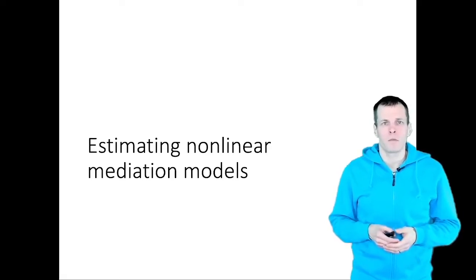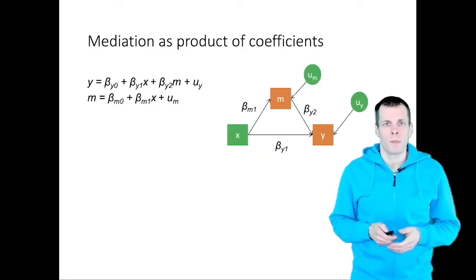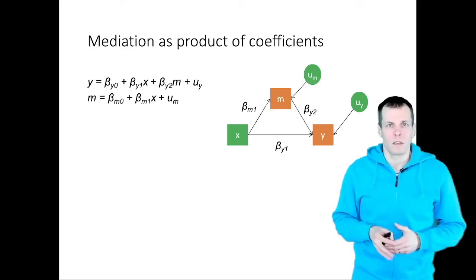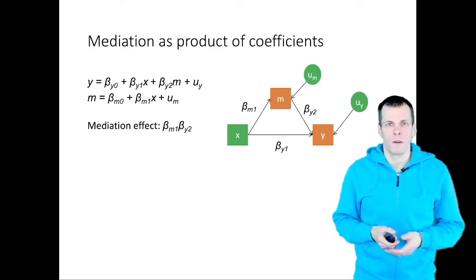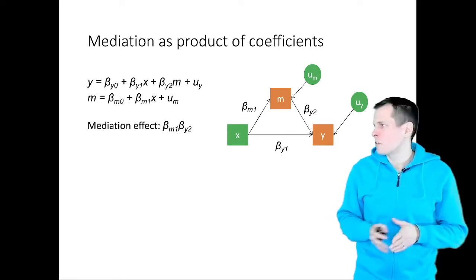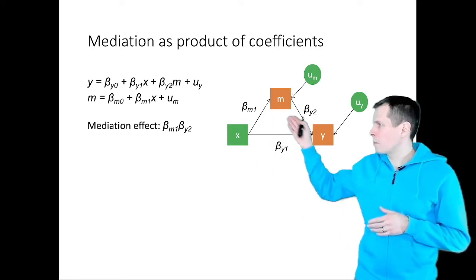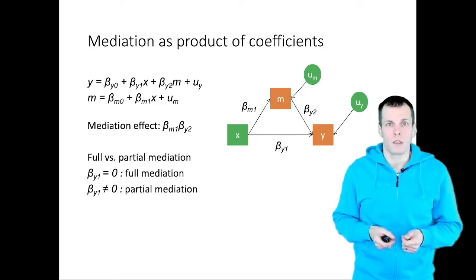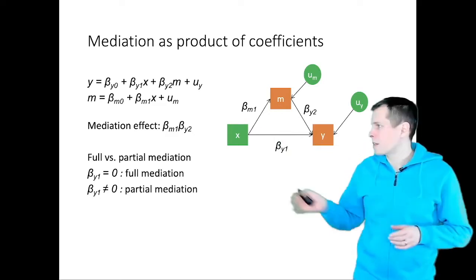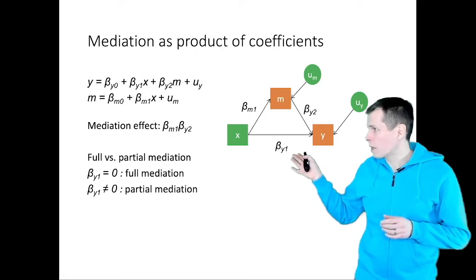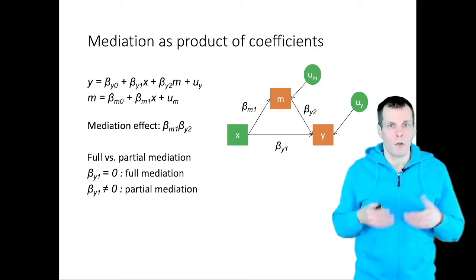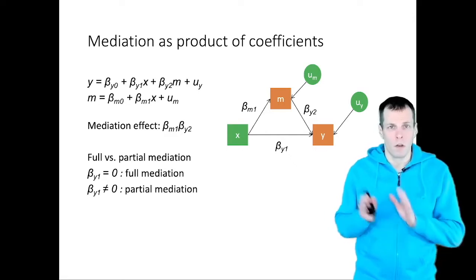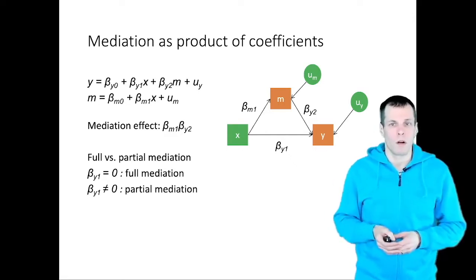Estimation of non-linear mediation models can be a bit challenging. When we first learn about mediation, we learn about the linear case. For the linear case, we might define mediation as a product of two coefficients — from x to m, from m to y. We also learn that full mediation and partial mediation can be differentiated based on the coefficient beta y1. If it's zero or non-significant, we have full mediation; if it's non-zero and significant, we have partial mediation.